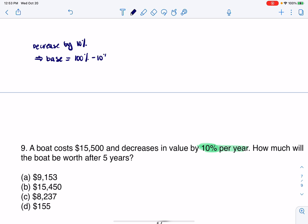They said you're decreasing by 10% a year, so your base is actually going to be 90%, which I'll write as the decimal 0.90. That's how you can determine your base.